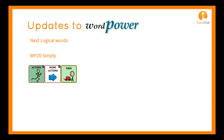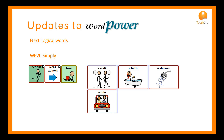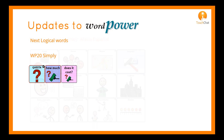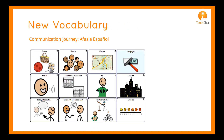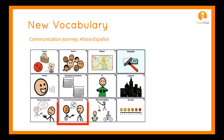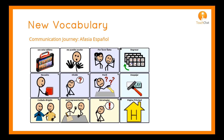WordPower 20 Simply was updated with next logical words following take as well — options for a walk, a bath, a shower, and a ride appear. The last addition is the ability to say how much does it cost. A new vocabulary has also been added to the TouchChat options: Communication Journey Aphasia has been translated to a version in Spanish. Supporting documents found on the website are being translated and will be available in Spanish as well.